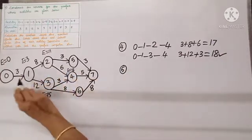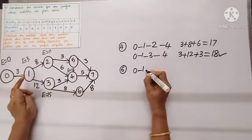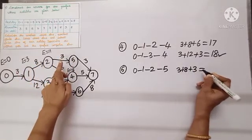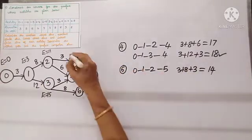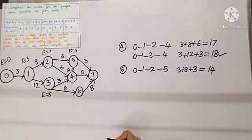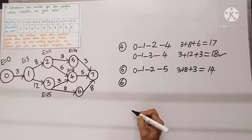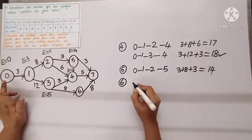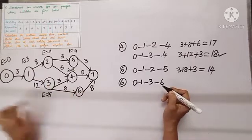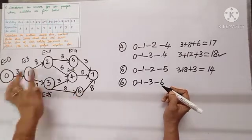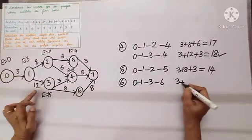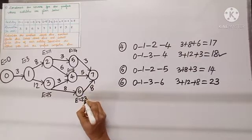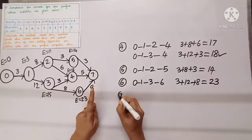Node five has only one arrow mark — one way: zero to one, one to two, two to five gives three plus eight plus three equals fourteen. So E at five is fourteen. Node six has only one way: zero to one, one to three, three to six gives three plus twelve plus eight equals twenty-three. So E at six is twenty-three.